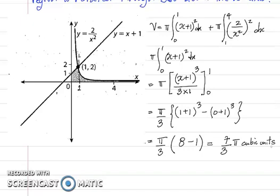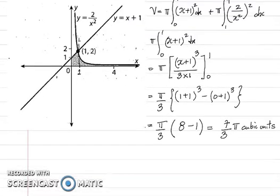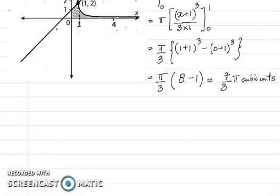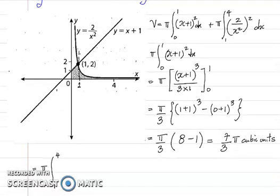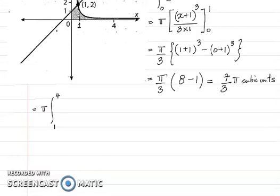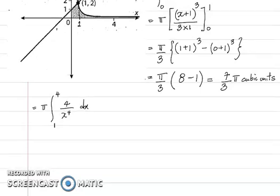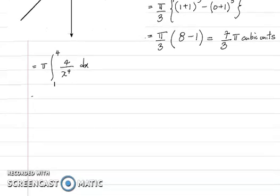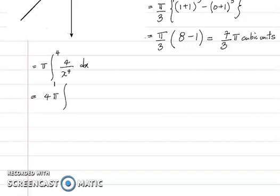Now for the second piece. We have π times the integral from 1 to 4 of (2/x²)² dx, which simplifies to π times the integral from 1 to 4 of 4/x⁴ dx. Pulling out the 4, this becomes 4π times the integral from 1 to 4 of x⁻⁴ dx.